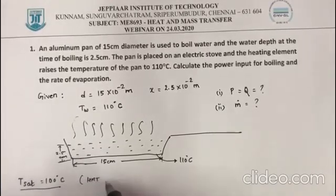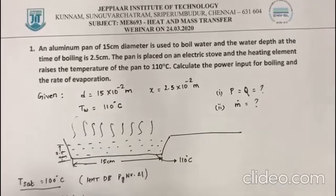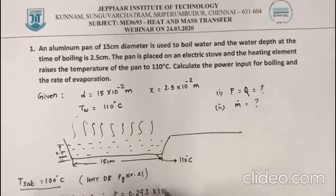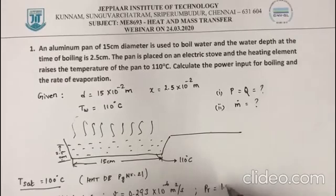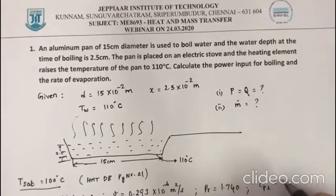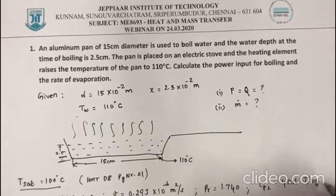The properties of water at this temperature can be gotten from the HMT data book: ρ = 961 kg/m³, kinematic viscosity ν = 0.293 × 10⁻⁶ m²/s, Prandtl number Pr = 1.740, and specific heat capacity at constant pressure Cpl = 4216 J/kg·K.